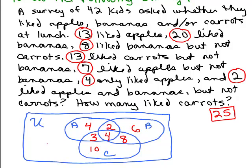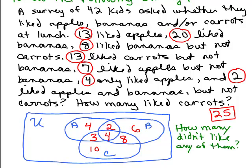Even though I didn't completely fill out my Venn diagram, let's finish it. What if someone asked how many didn't like any of them? I need to know what's outside all the circles. There are 42 kids total, so all eight regions must add up to 42. Adding up what I have so far gives 37, so 37 plus 5 equals 42 — there are 5 students that didn't like any of them.